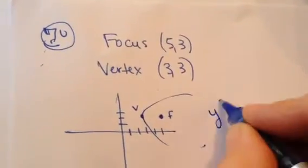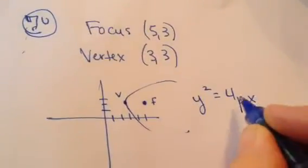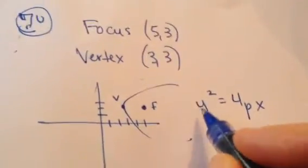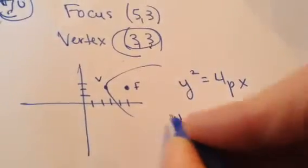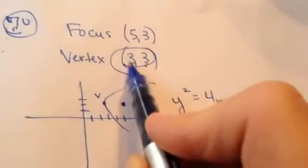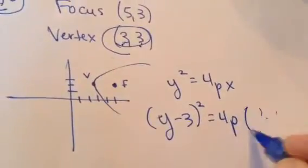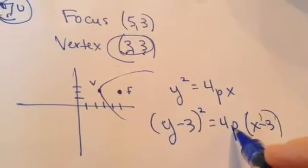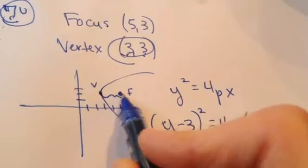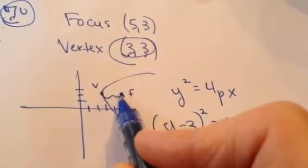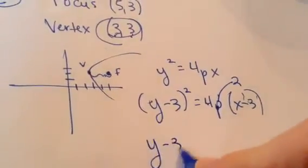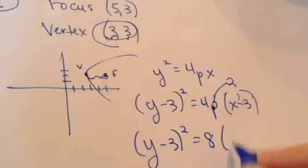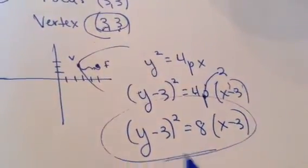Since it opens to the right, I know it uses this standard equation. This is if it's at (0, 0), but it's at (3, 3). My y value is 3, so this one will be (y minus 3). My x value is 3, so it's going to be (x minus 3). All you have to know is p — you went 2 units to the right, a positive 2. So p equals 2, and 4 times 2 is 8. My final answer is (y minus 3) squared equals 8(x minus 3).